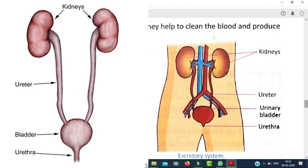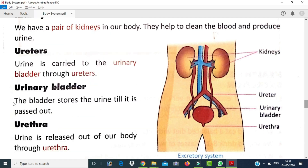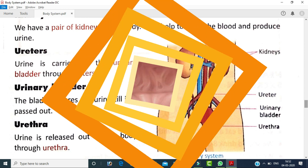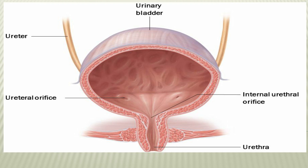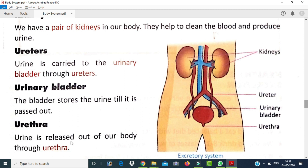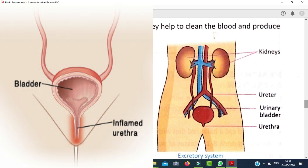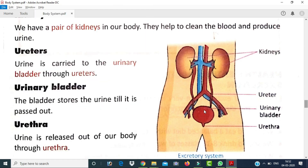The ureters are connected between the kidneys and the urinary bladder. After the kidneys produce urine, it comes into the urinary bladder through the ureters. Urine is then released out of the body through the urethra, which is the opening of the urinary bladder.